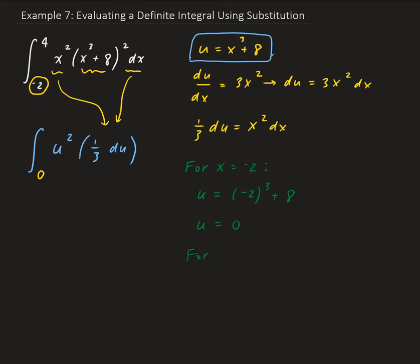For x equals 4, u is going to be equal to 4 cubed plus 8, which gives us 72. So 4 in terms of x is equivalent to 72 in terms of u. We can go ahead and evaluate this integral now. We have 1/3 times the integral from 0 to 72 of u squared du.